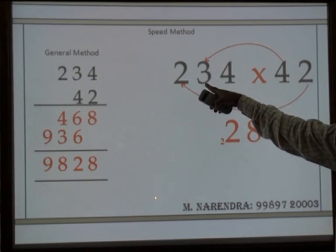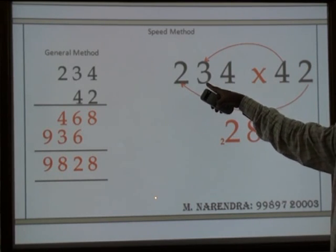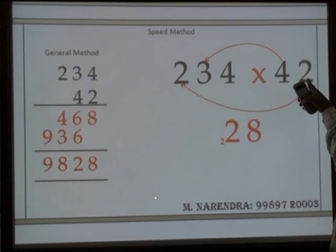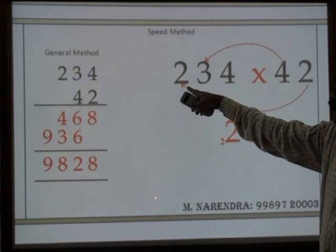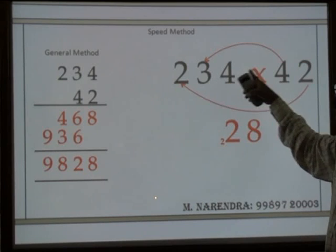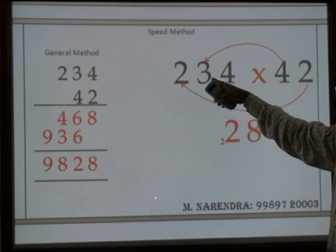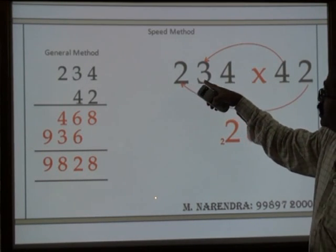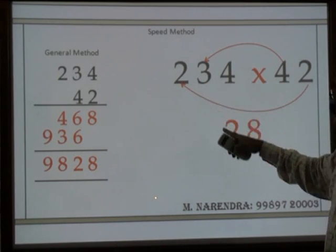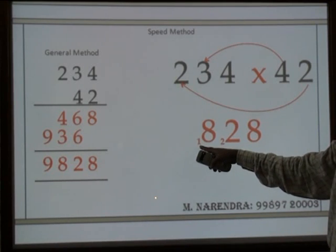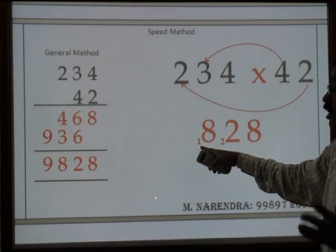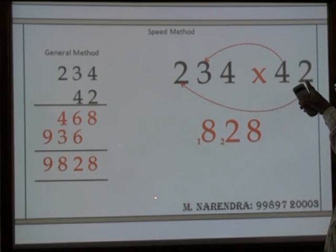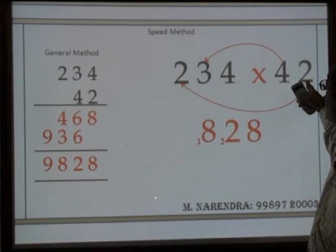So twenty-two — write 2, carry 2. Next: 2 into 2, plus 4 into 3, is 4 plus 12, which is 16, plus carry 2 is 18.